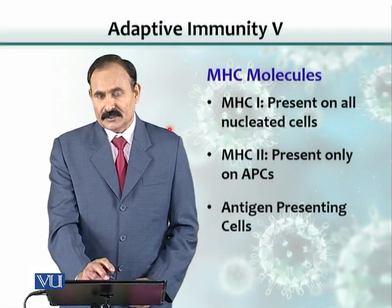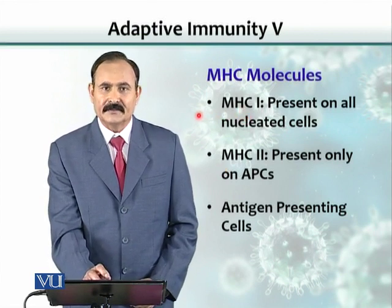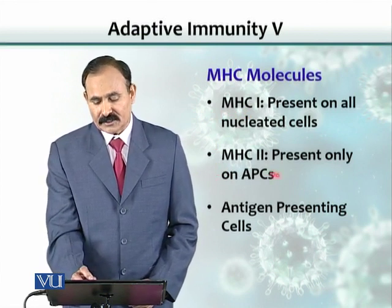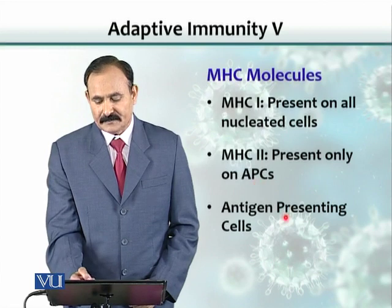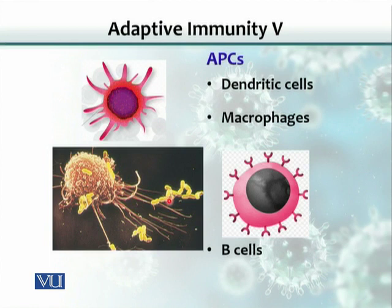There are two types of MHC molecules: MHC class 1 and MHC class 2. MHC class 1 is present on all nucleated cells of the body, while MHC class 2 is restricted to APCs — antigen-presenting cells. There are three cell populations we call APCs: dendritic cells, macrophages, and B cells. B cells are also able to present antigen. These three cells are professional antigen-presenting cells.